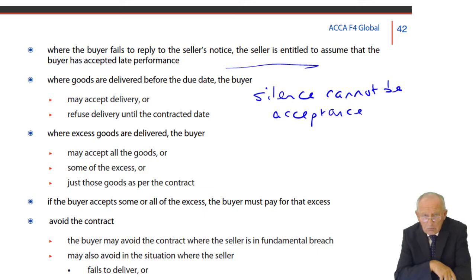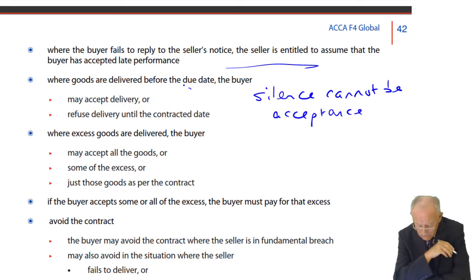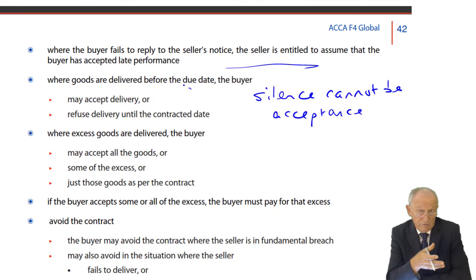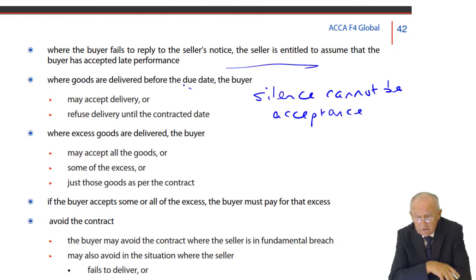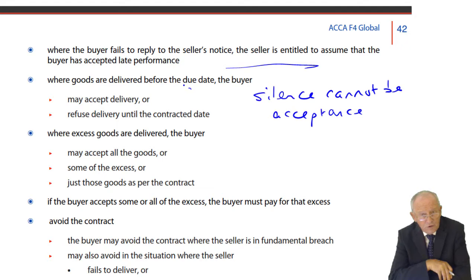Where goods are delivered before the due date, the buyer may accept delivery — which would be normal. You order something for delivery on the 20th and it arrives on the 18th. The buyer may accept that, but interestingly, the buyer can also refuse it and say, take them away and come back on the 20th and deliver the goods like we agreed. So the buyer can refuse delivery until the contract date.